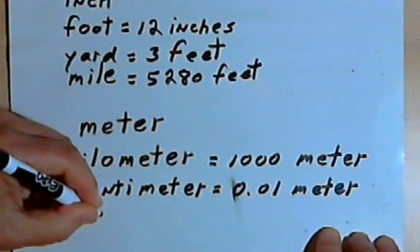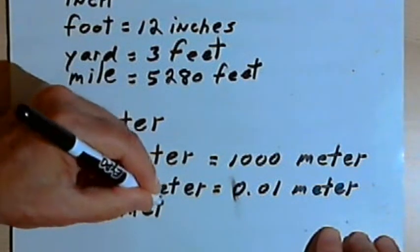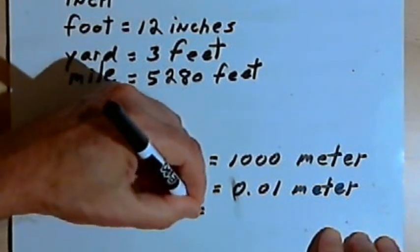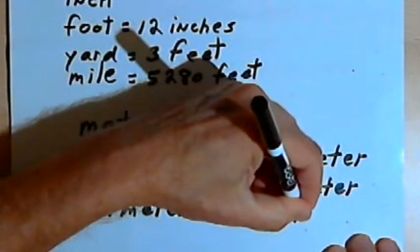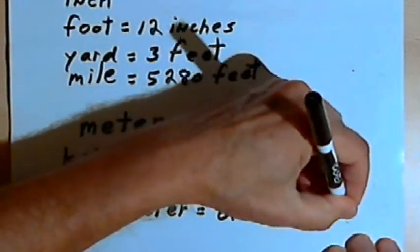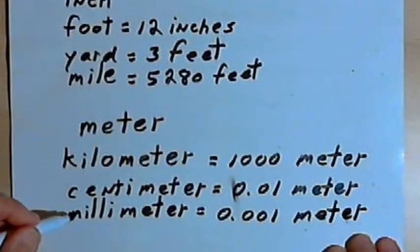Smaller than a centimeter is a millimeter. A millimeter is a thousandth of a meter. And just for reference, something like a CD or a DVD is about one millimeter thick.